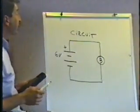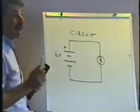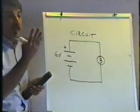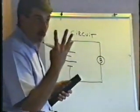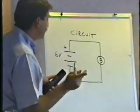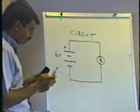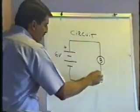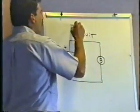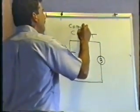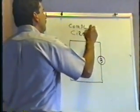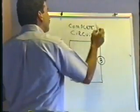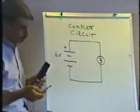Now, in order to have a circuit, you really have to have four things going for you. This is pretty important. In order to have a complete circuit, you really need to have four things.